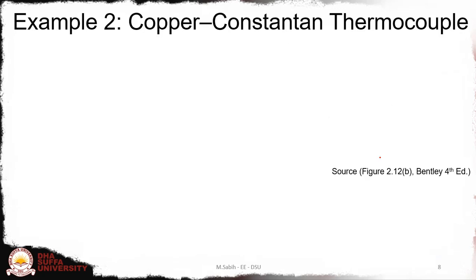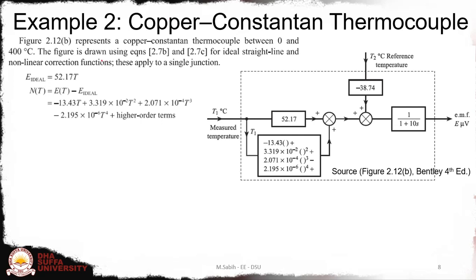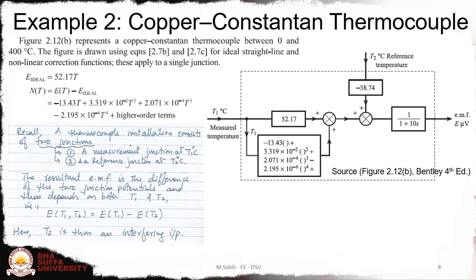The second example is a copper-constantan thermocouple. In this figure, this represents the linear model and nonlinearity. Notice that we have the nonlinearity here, and there is no modifying input except we have only one interfering input here. This figure is drawn with the help of these equations: the linear equation 52.17, the ideal linear equation, and we have the nonlinear equation here. Using these two equations we are able to draw it, and then we have one upon 1 plus 10S as the dynamic model of the thermocouple.